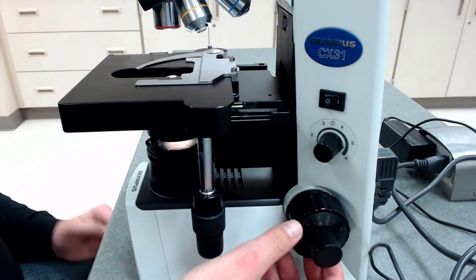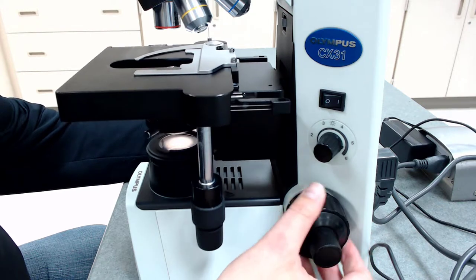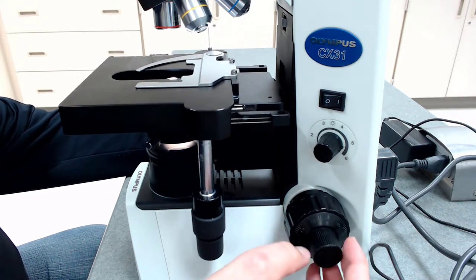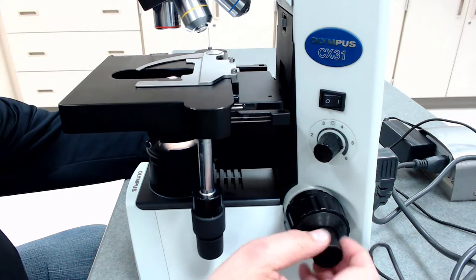So you have the coarse adjustment knob. And notice as I turn this larger portion on the inside, the stage moves up and down a lot. On the outside, you have the fine adjustment knob. And it's moving, but it's barely moving. So as I really get it spinning, you can see a little bit of movement there.